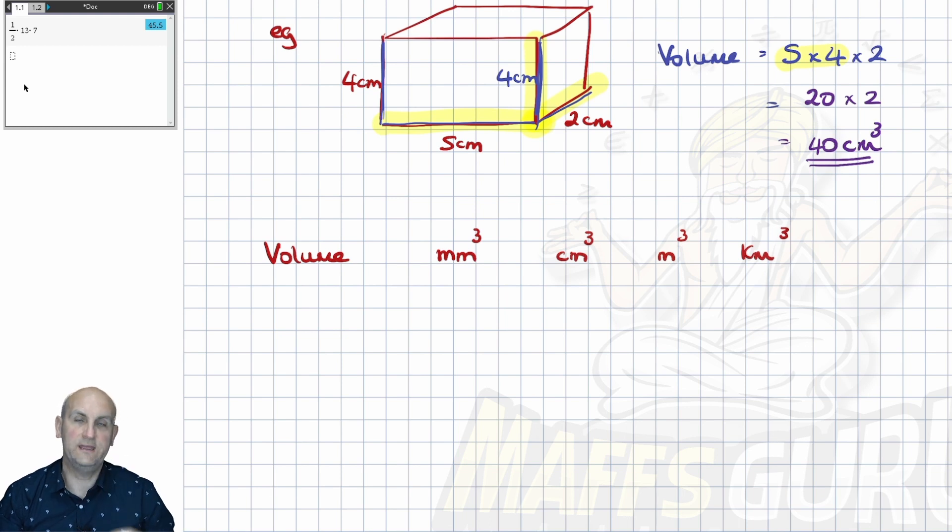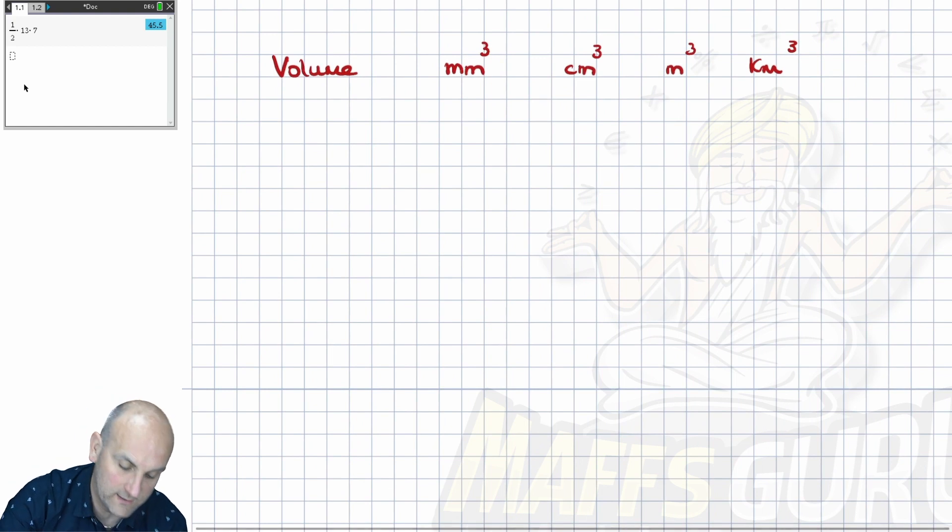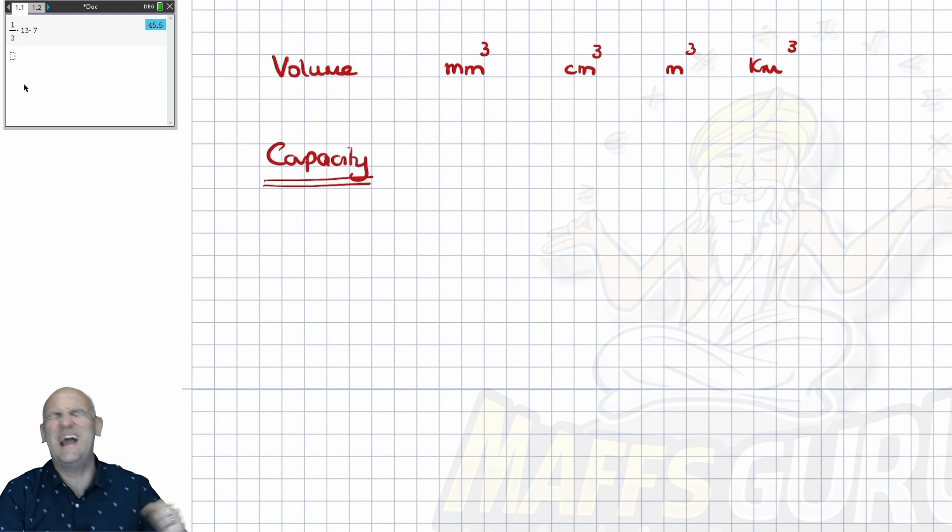What about if we have fluids? Well, believe it or not, when we have fluids, otherwise known as capacities, we just do exactly the same calculation, because they're going to give you lengths in terms of millimeters, centimeters, meters, whatever. But then you're going to use a conversion chart, or I'm going to talk about the conversions now.